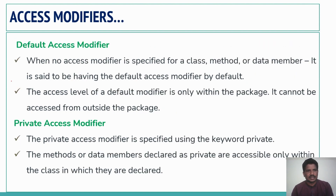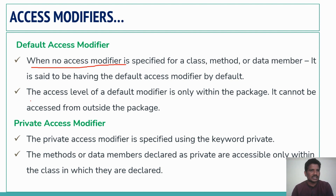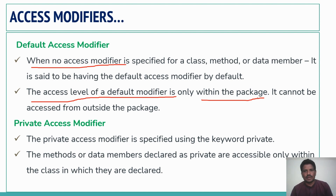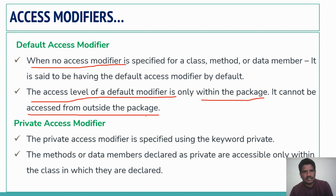Default Access Modifier: when no Access Modifier is specified for a class, method, or variable, it is said to have the default Access Modifier. If you don't use any access keyword, then it is the default Access Modifier. The access level of the default modifier is only within the package. A package consists of a collection of classes and interfaces. It cannot be accessed from outside the package. Default is similar to public, but the difference is that it is restricted to within the package only.